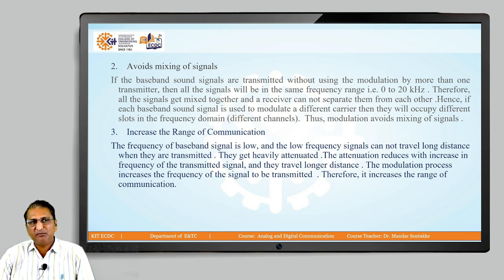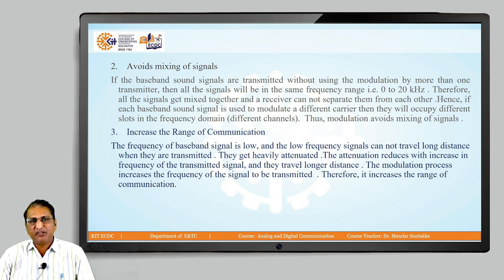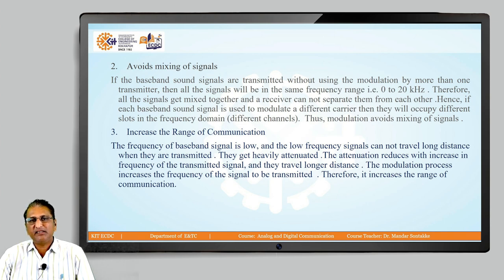The second need for modulation is to avoid mixing of signals. If baseband sound signals are transmitted without modulation by more than one transmitter, all signals will be in the same frequency range (0 to 20 kHz) and will mix together, making it impossible for the receiver to separate them. By using different carrier frequencies to modulate each baseband signal, they occupy different slots in the frequency domain, avoiding mixing.